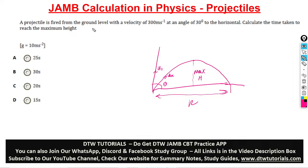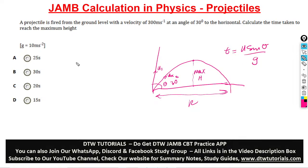This is all about projectiles. The projectile is fired from ground level with a velocity of 300 meters per second at an angle of 30 degrees. Calculate the time taken to reach the maximum height. You must know your formulas in projectiles. For time to reach maximum height, t equals u sine theta over g, where g is acceleration due to gravity.